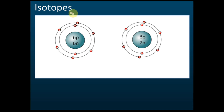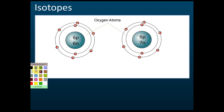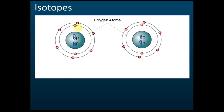What are isotopes? Both of these are oxygen atoms. One oxygen atom has eight protons and eight neutrons, and this one has eight protons and nine neutrons.